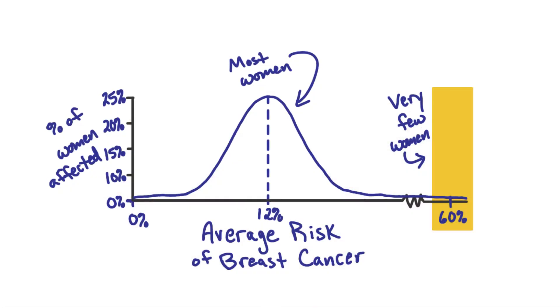So do 60% of women who have breast cancer have this mutation? That's a really good question, but the answer is actually no. In fact, very few women who have breast cancer actually have these mutations. If we look back at our original graph of breast cancer risk where the average was 12%, notice that a risk of 60% is way to the right of that. And only a few women have that risk, implying that even fewer women have this particular mutation because it's not the only contributor to breast cancer.